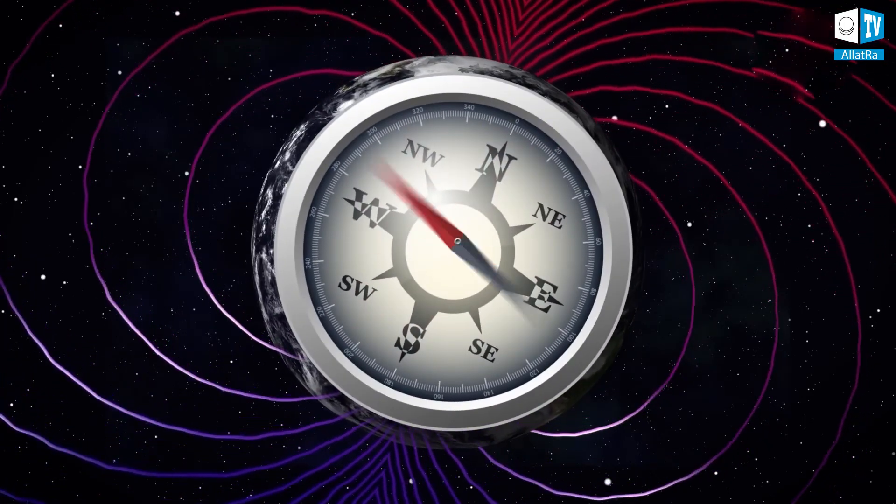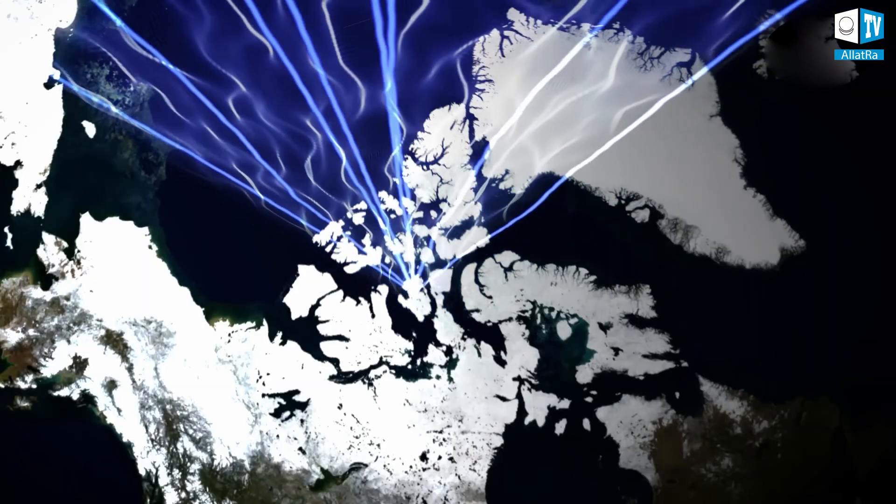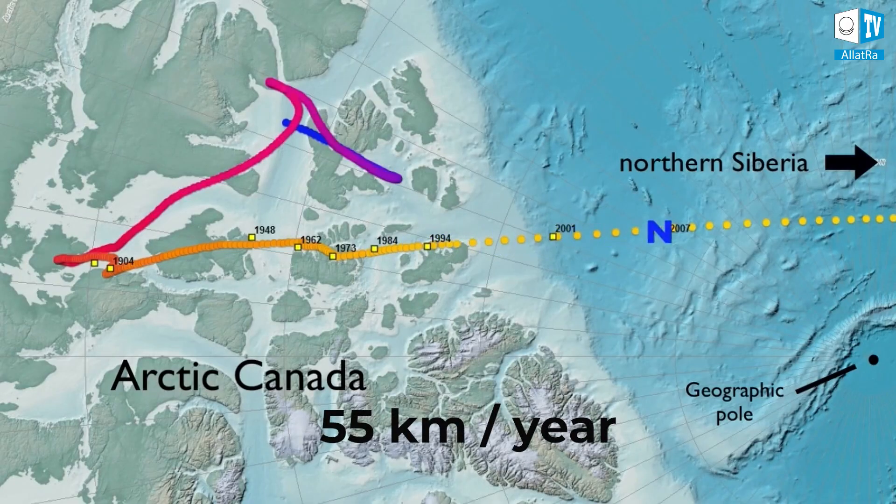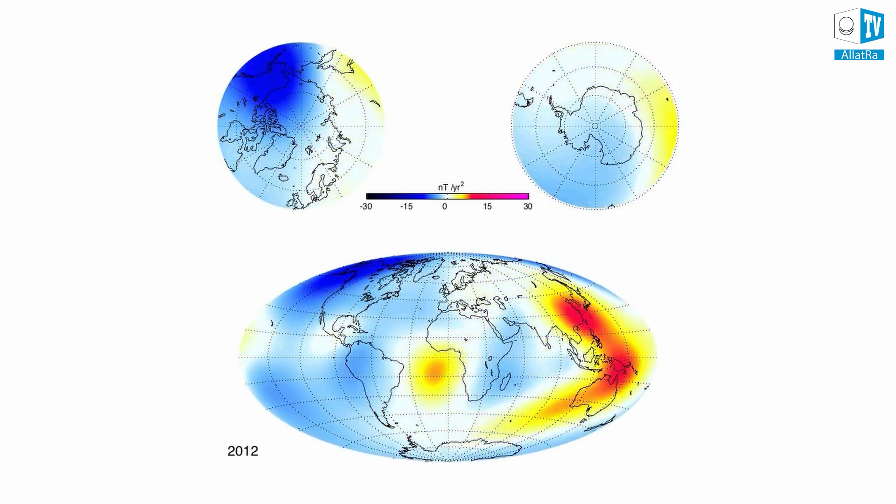Meanwhile, the speed of the North magnetic pole drift over the past 20 years has increased almost fourfold and amounted to 55 km per year. Along with this, the planetary magnetic field, which has already been mentioned, has strongly weakened.